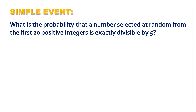This time, let us differentiate the three events in terms of examples. First, simple event. This is the example: what is the probability that a number selected at random from the first 20 positive integers is exactly divisible by 5? This is a simple event because there is one outcome — only the number is divisible by 5.